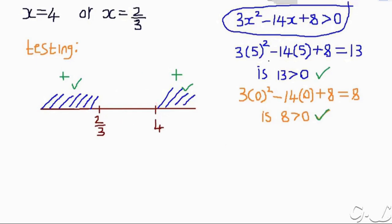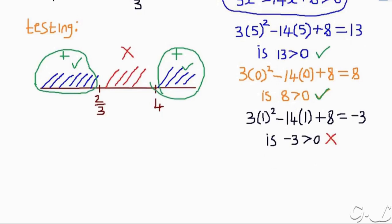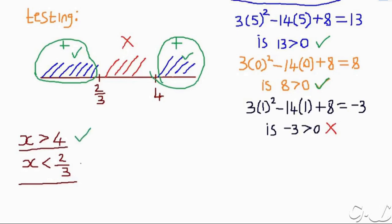Let's check values between 2 over 3 and 4. We can try x equals 1, because 1 is between 2 over 3 and 4. When you replace x with 1, it gives negative 3. Is negative 3 greater than 0? No, that is false. So the values between 2 over 3 and 4 are not in the range. Therefore, the answer is: x is greater than 4, and x is less than 2 over 3.